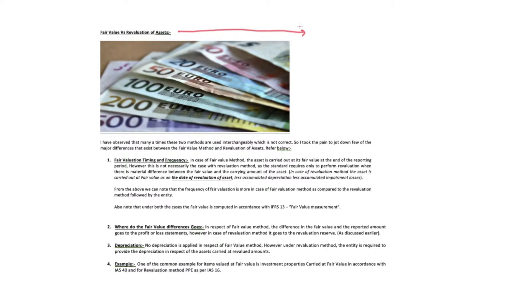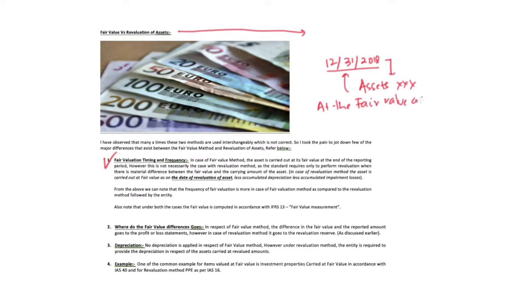So now let's look at the first difference: it's the timing and the frequency. In case of fair value method, the asset is carried at the fair value as of the reporting date. Suppose I am reporting at 12-31-2018, then the asset should be at the fair value as on the reporting date. However, under revaluation method, the asset is only at the fair value on the date of revaluation.